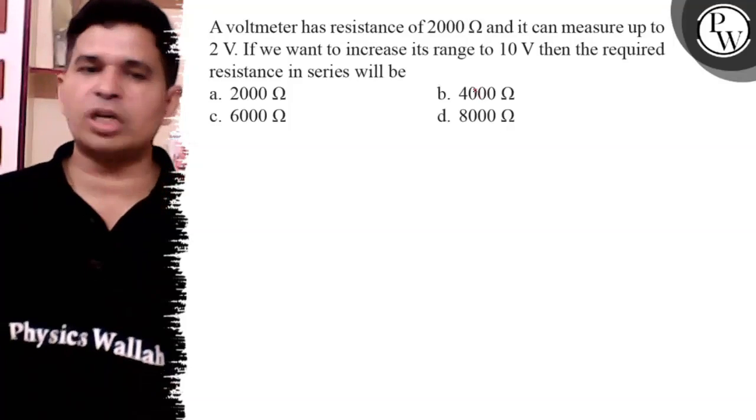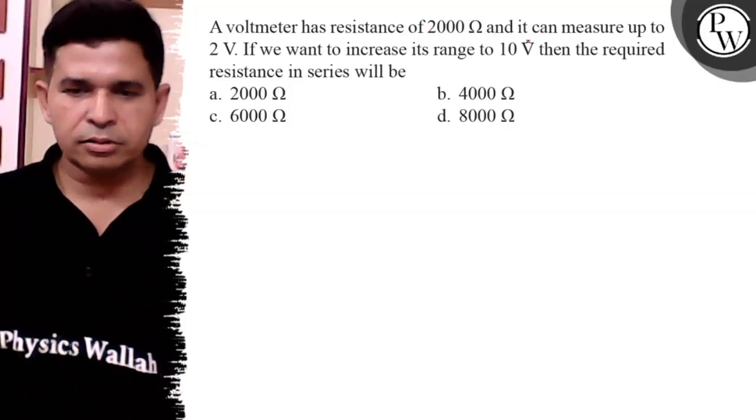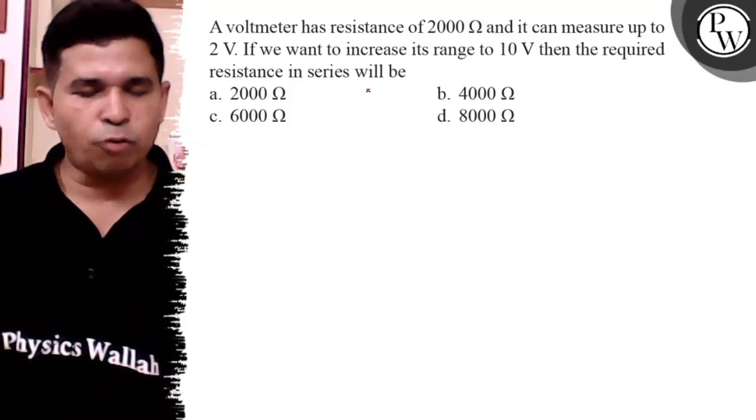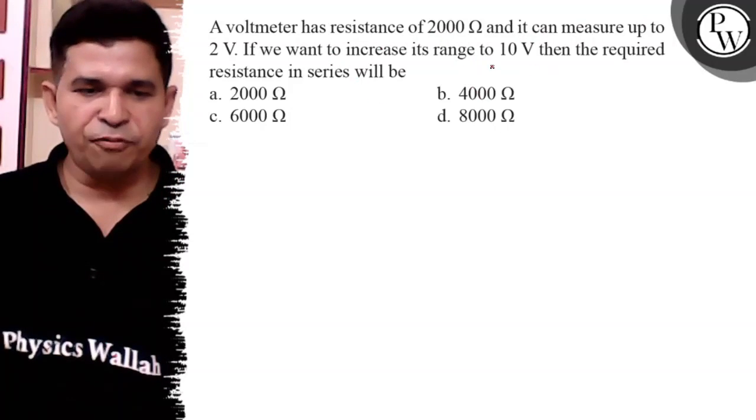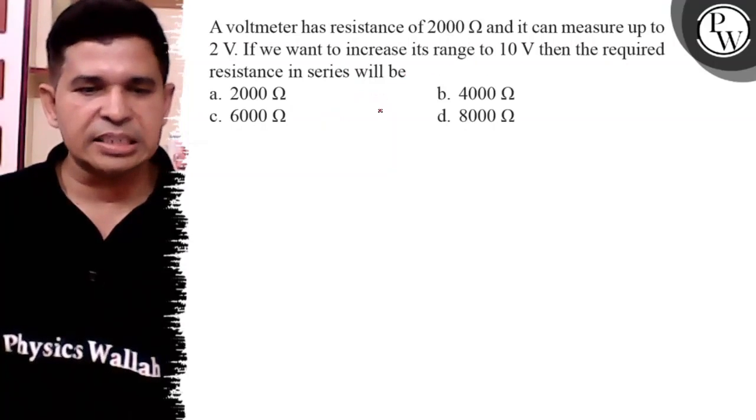Hello Bakchon, let us see this question: A voltmeter has a resistance of 2000 ohm, it can measure the voltage 2 volt. If we want to increase its range up to 10 volt, what is the required resistance in series?